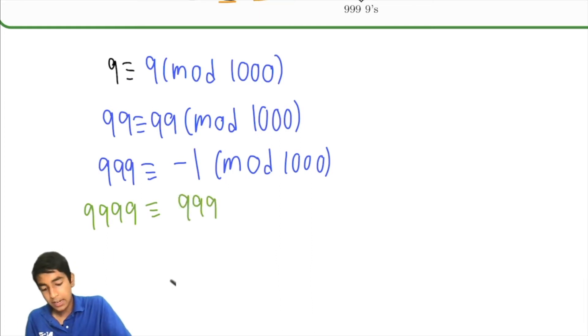But remember, 999 is congruent to negative 1 mod 1,000. And we can keep going, but we'll notice that this actually eventually becomes the same thing. All these terms are congruent to negative 1 mod 1,000 as well.